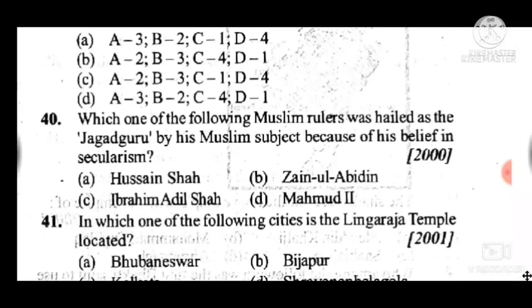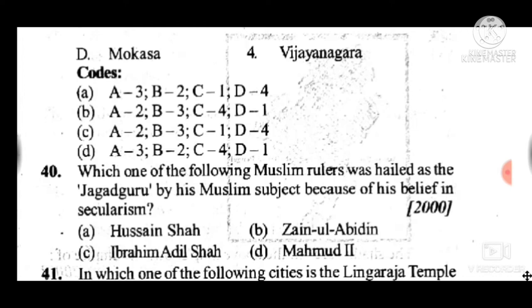Question 40: Which one of the following Muslim rulers was hailed as the 'Jagad Guru' by his Muslim subjects because of his belief in secularism? Answer is C, Ibrahim Adil Shah II.